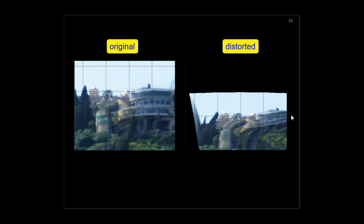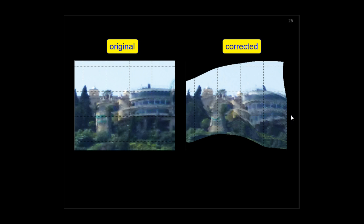This is the original scene and the distorted one. This is the corrected scene. Notice how the scale is corrected.